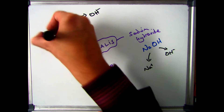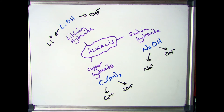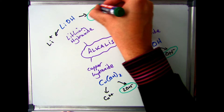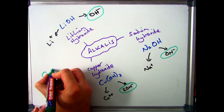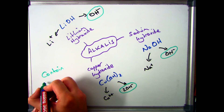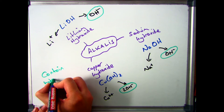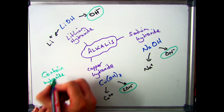So again, a similar pattern to what we saw in the acids — all alkalis have got this hydroxide ion, and that's what makes them an alkali.